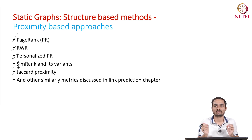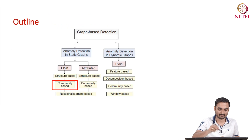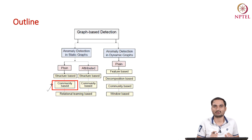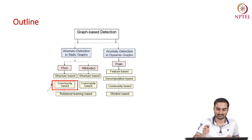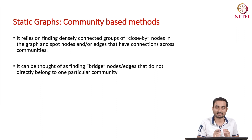If a node is very far from the remaining nodes in the graph, then that node is basically an outlier. Now let us look at community-based approaches. Here we focus on a static plain non-attributed graph.